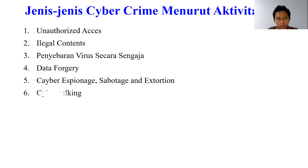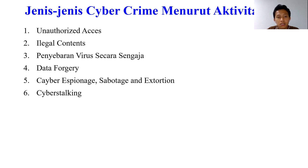Jenis yang ke enam yaitu cyber stalking, yaitu kejahatan yang dilakukan untuk mengganggu atau melecehkan seseorang dengan memanfaatkan komputer. Misalnya dengan melakukan teror melalui pengiriman email secara berulang-ulang tanpa disertai identitas yang jelas. Kemudian jenis yang ke tujuh adalah carding, yaitu kejahatan yang dilakukan untuk mencuri nomor kartu kredit milik orang lain dan digunakan dalam transaksi perdagangan di internet.